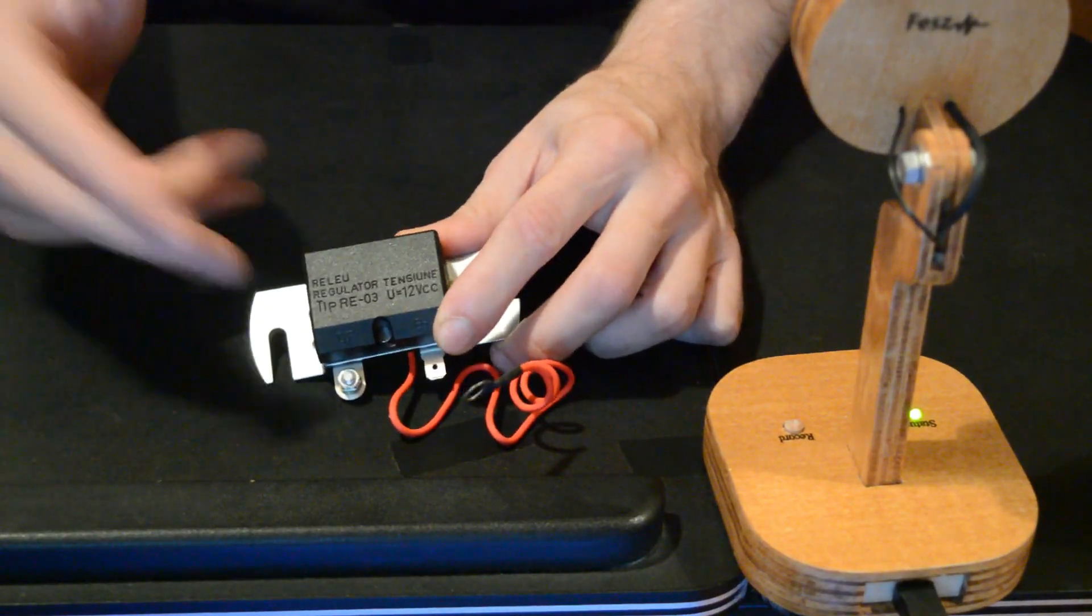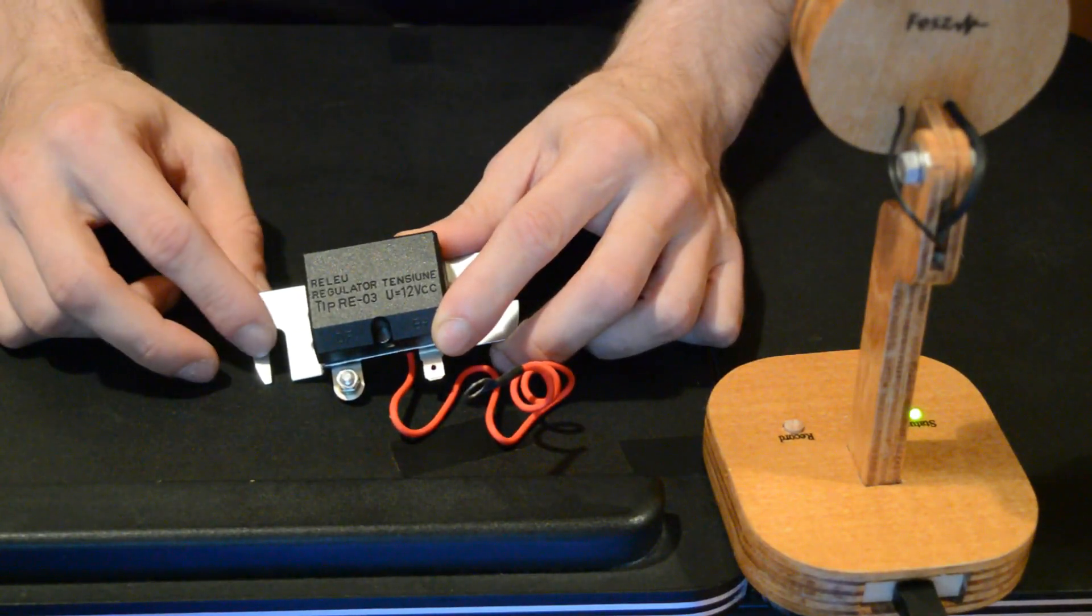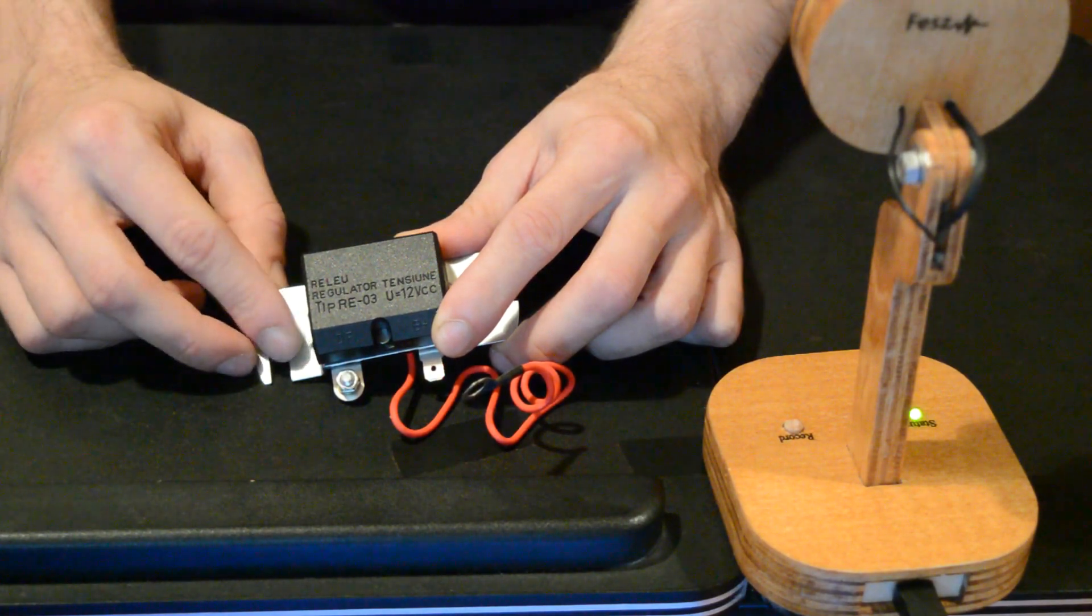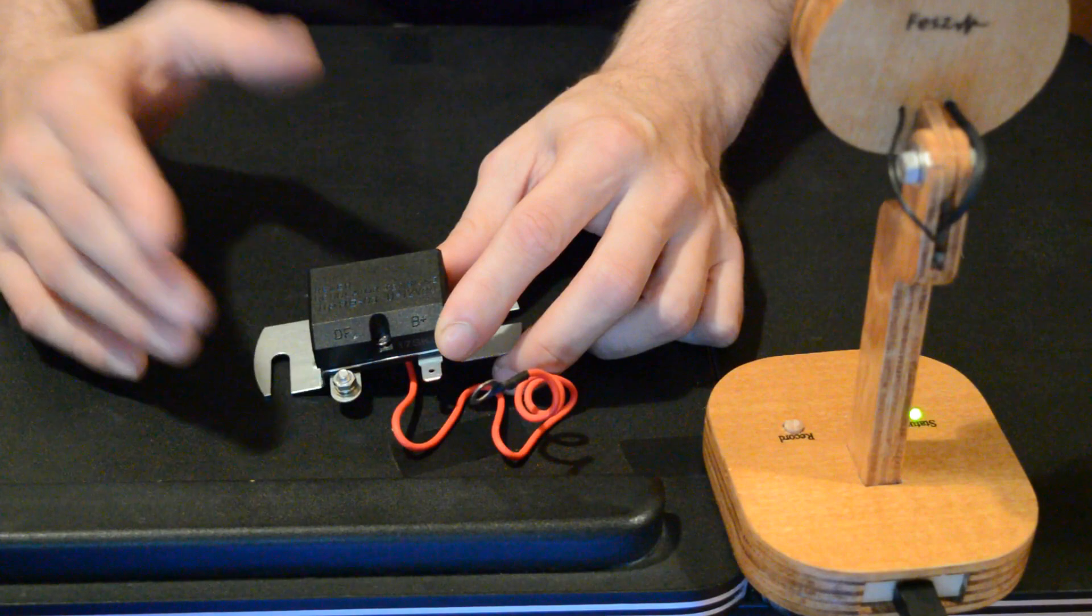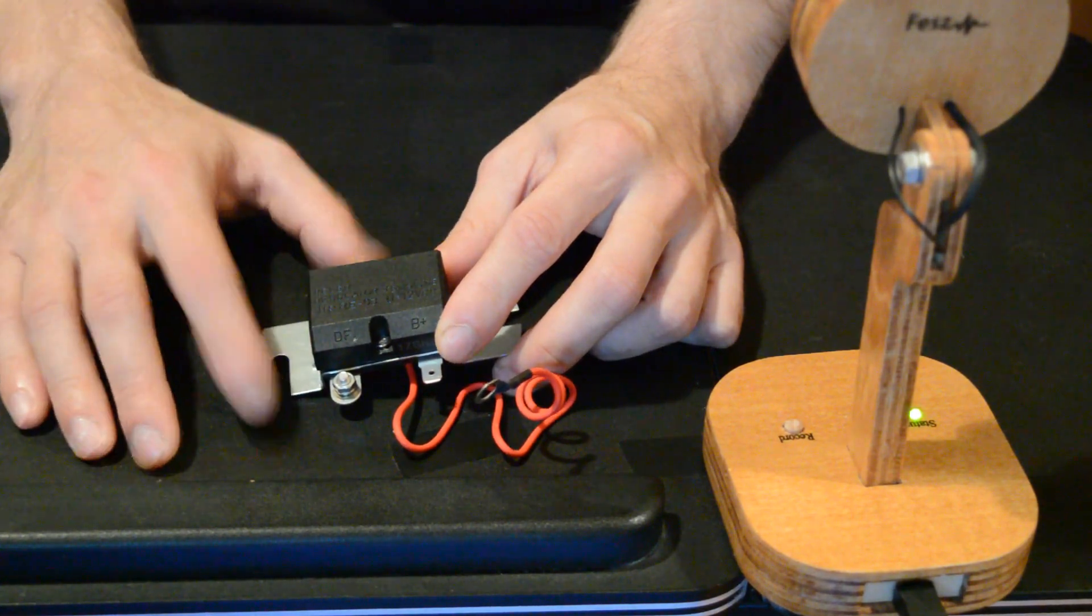So I got this thing from a friend. It's a regulator relay type RE-03, commonly used on Datsun 1300, 1400, and what I want to do is take the part apart, see exactly how it's built and how it functions.